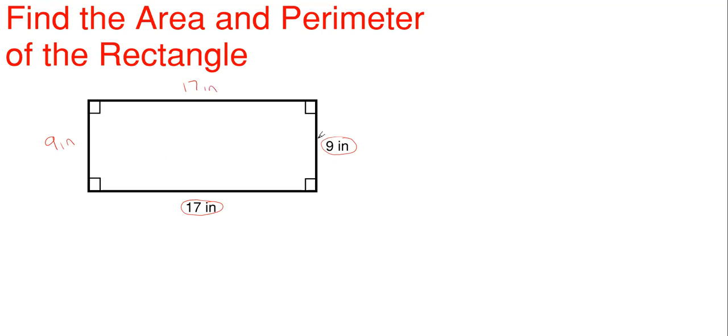A rectangle will have four sides with two sets of equal sides, 17 inches and nine inches for this particular example. And each corner needs to have a 90 degree angle, which will always be represented by this little box in each corner.